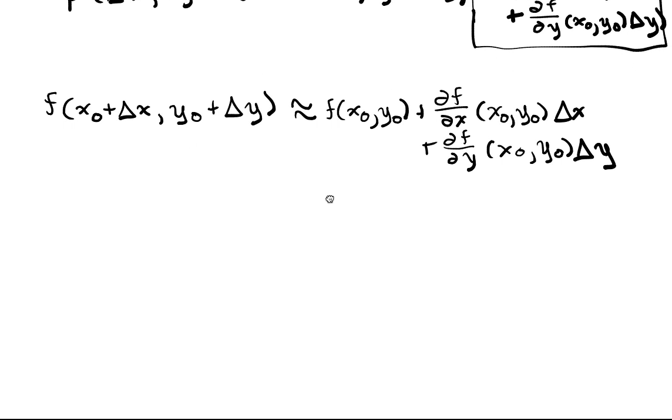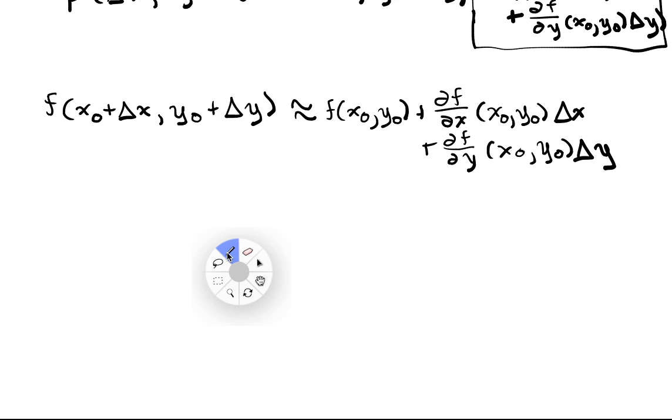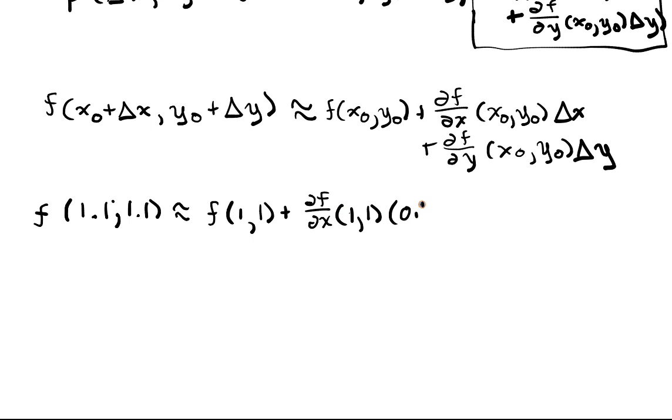So for example, let's plug in numbers here. So f of (1.1, 1.1) is approximately, well, it's f of (1, 1) plus df/dx of (1, 1) times 0.1 plus df/dy of (1, 1) times 0.1.